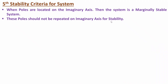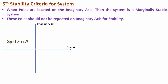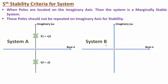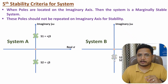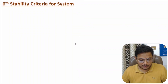Let me explain graphically. System A has two poles on the imaginary axis — one at +j3 and another at −j3 — so this system is marginally stable. But with system B, both poles s1 and s2 are at −j2, meaning they are repeated on the imaginary axis. This makes system B unstable. So it is essential to know that repeated poles on the imaginary axis make the system unstable.